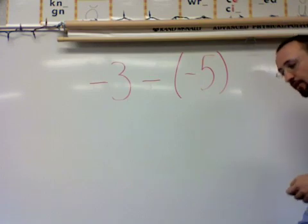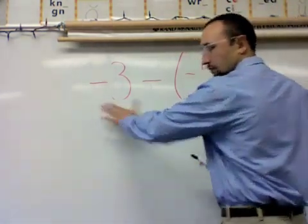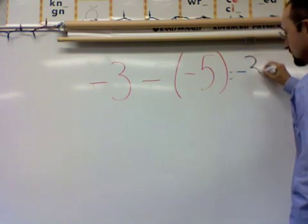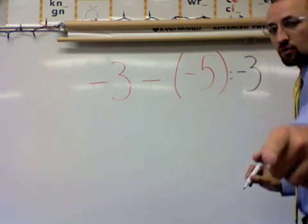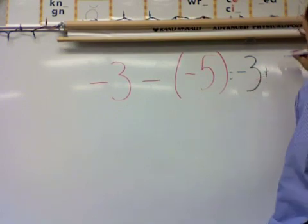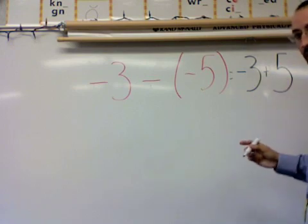First step is to rewrite it. My integer on the left will always stay the same. So this is rewritten as negative 3, and I want to add the opposite of negative 5, which is just positive 5.